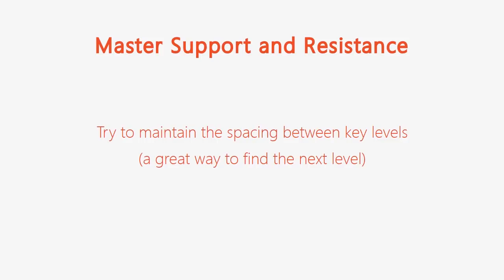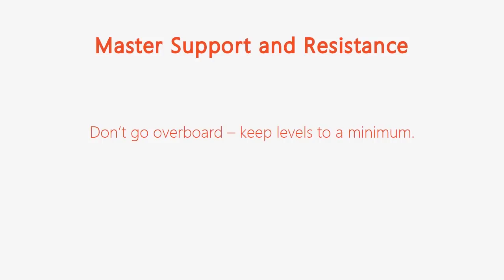Here's a little-known secret: there's a science to drawing levels. Once you get good at this, you'll notice there's often a consistent distance between each level — it could be 100 pips, 200, or something like 250 to 350 pips. Once you see that pattern, you can use that same range to find the next level in the sequence. Also, don't go overboard — keep levels to a minimum. Too many levels means you won't have enough space between them to trade. Focus on the really key levels, which are usually those swing highs and lows.